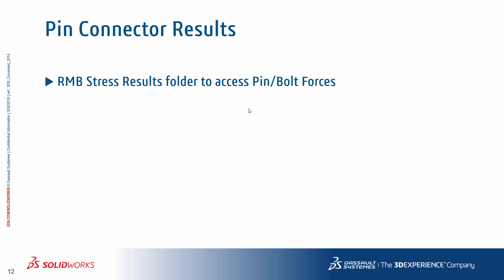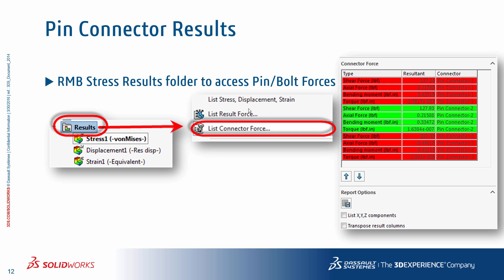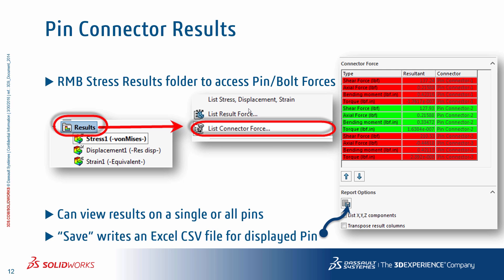Once a pin connector has been created and the simulation study is solved, a summary of forces for each pin can be found by right-clicking on the results folder and choosing the list connector forces option. You can look at results on a single pin or on all pins. It's always good practice to rename connectors in the feature tree so you can identify them easily in the results list. You also have the option to save the results as a CSV file or into an Excel spreadsheet for further use. These values can then be used to calculate stresses based on pin geometry using standard beam calculations in a spreadsheet to determine if fasteners are under-designed.